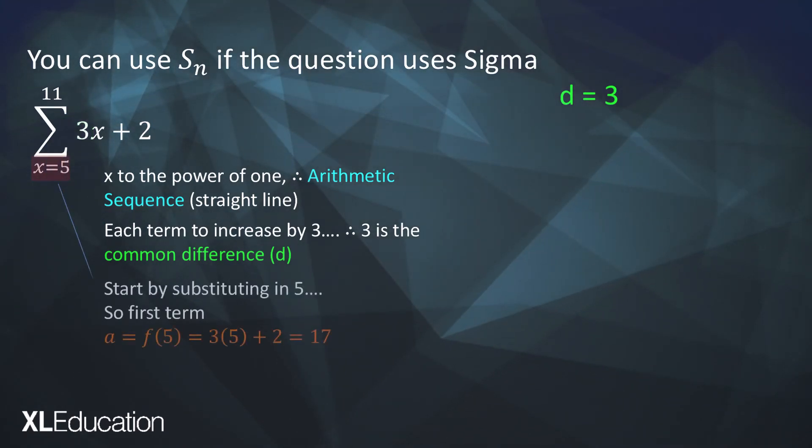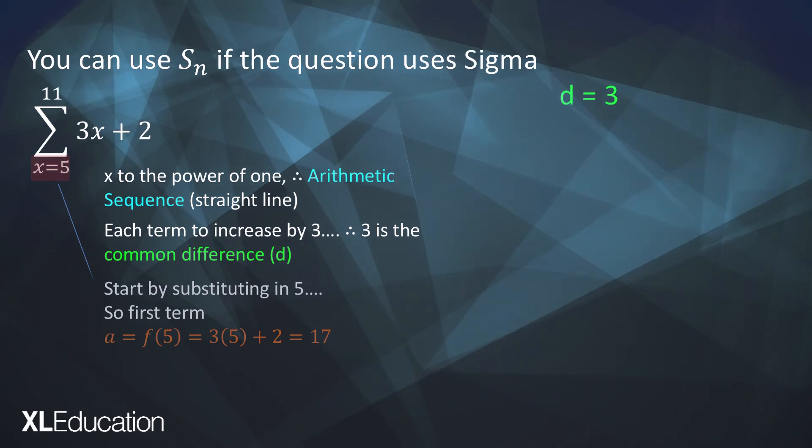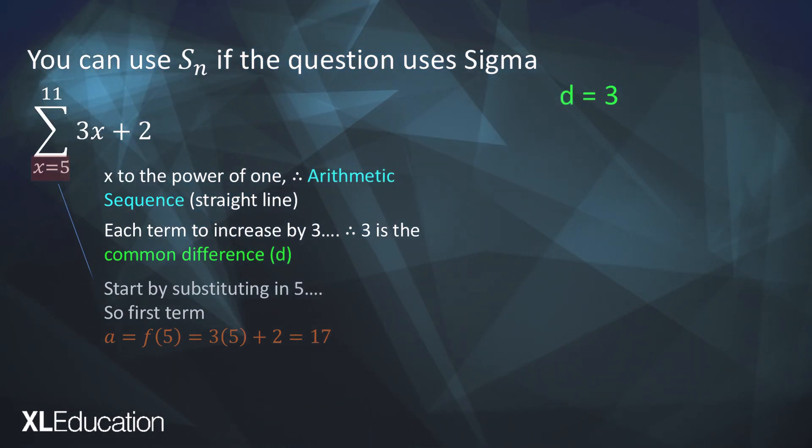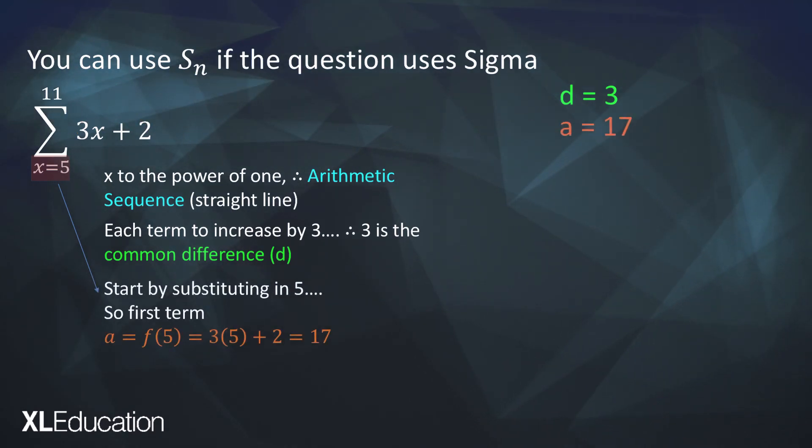Then that x equals 5 tells us that the first term that we're going to be adding up is obtained by substituting 5 into our formula. So we substitute 5 into the formula and we get 3 times 5 plus 2 is equal to 17. So a is equal to 17.